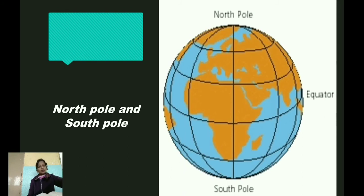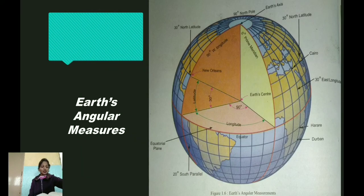While labeling the value of a parallel, it is necessary to mention whether it is in the northern hemisphere or in the southern hemisphere. The parallels from the northern hemisphere are referred to as 5 degrees N, 15 degrees N, 30 degrees N, whereas the parallels from the southern hemisphere are referred to as 5 degrees S, 15 degrees S, 30 degrees S, etc. You can see an image on the screen showing the earth's angular measurements.